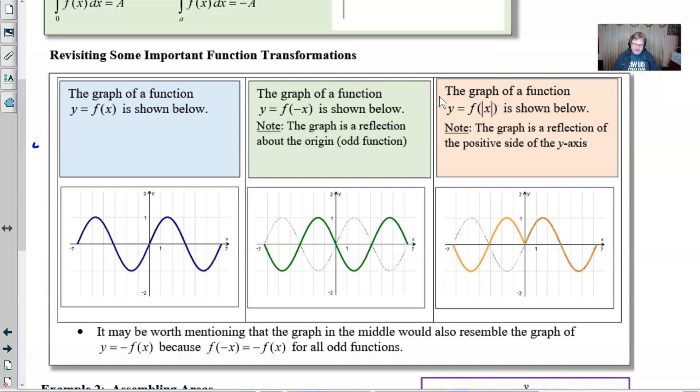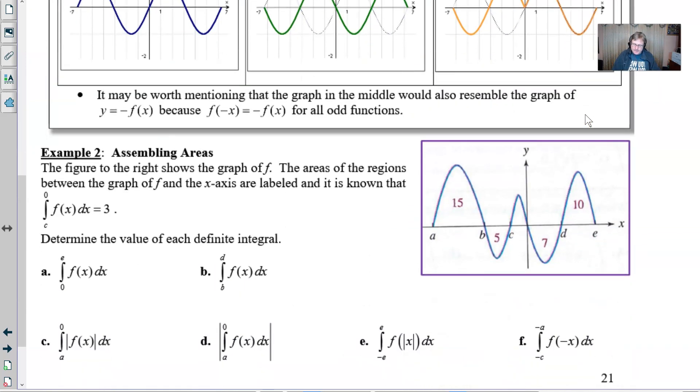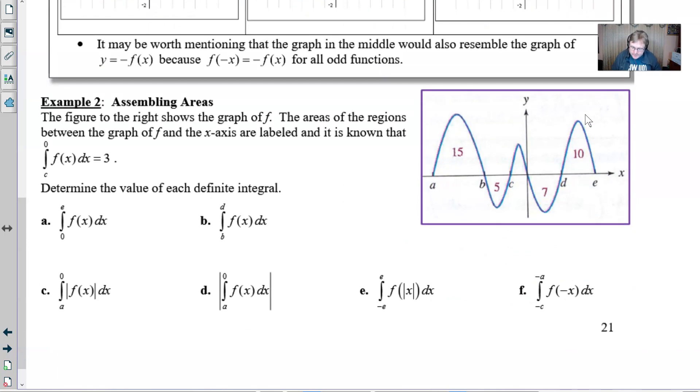Let's go ahead and take a look at example two. So the figure to the right shows the graph of f. The areas of the regions between the graphs of f and the x-axis are labeled and it is known that the integration from c to 0 of f(x) is equal to 3. All right, so what are we going to do with that? Determine the value of each definite integral.